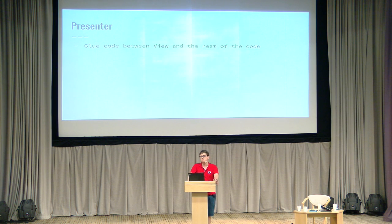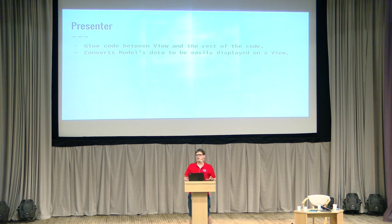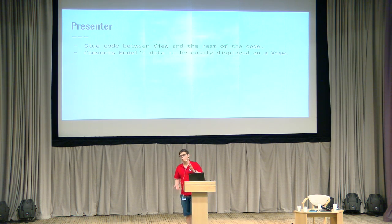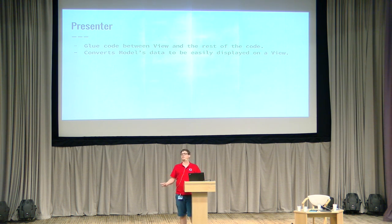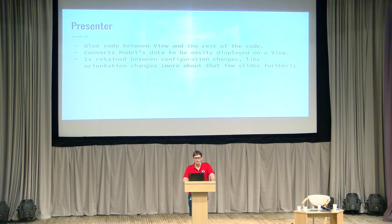As for the presenter, it's basically glue code between the view and the rest of the code. It gets data from another layer — the application layer — and converts it to the format acceptable by the view. For example, you have a repository object representing all data associated with GitHub repositories. On the other hand, you have a simple list displaying just the name of the repository. What the presenter does is map the entire object, extract only the string, and pass the data to the view — fitting only the view's needs, nothing more or less.